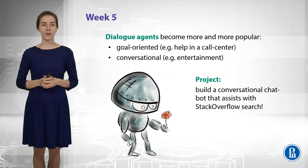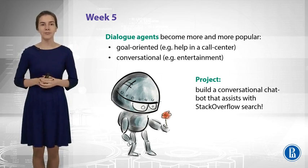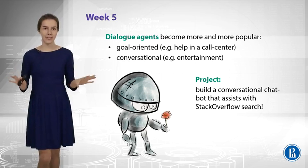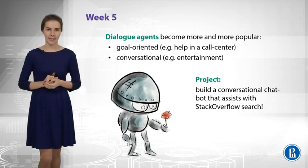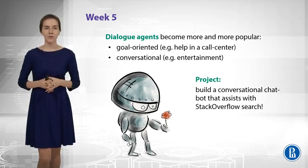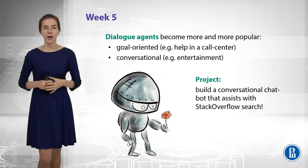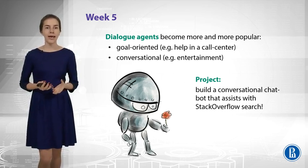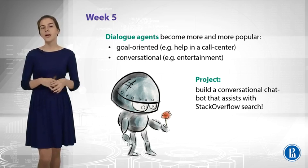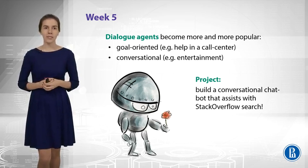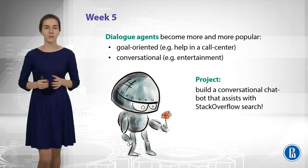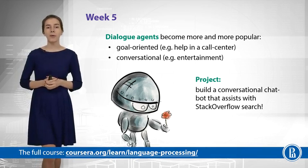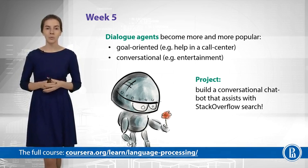During the last week of our course, we will combine all the knowledge we have to build a dialogue system. Dialogue systems can be different, and there are at least two important types. One type would be goal-oriented agents that try to solve some particular task — for example, they can assist you in a bank or help you with online shopping. On the contrary, there are also conversational, entertaining chatbots that just want to hold a conversation with you. We will cover these in detail during the last week, and the project will be about a Stack Overflow chatbot that tries to assist with search.